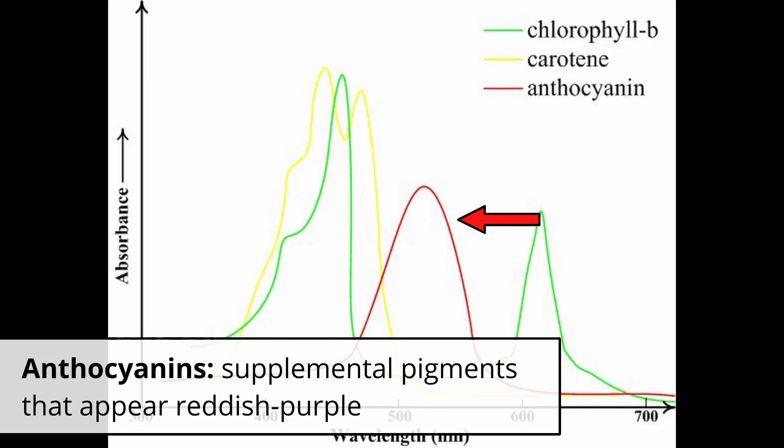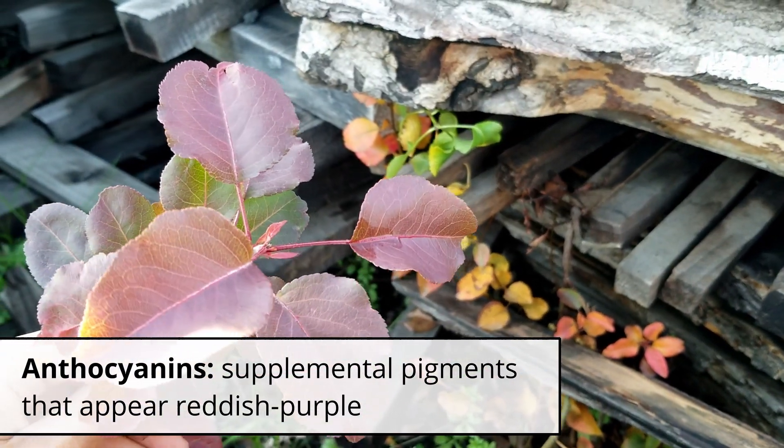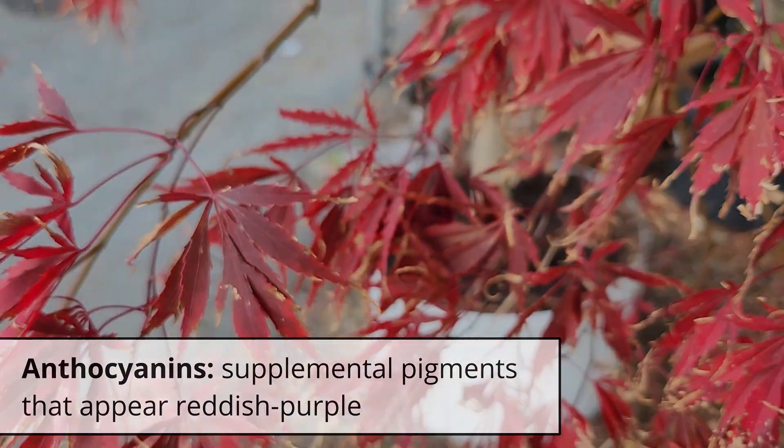The other group of pigments are the anthocyanins which look reddish purple and their function is more to absorb kind of like loose energy, anything that might be damaging to the plant.